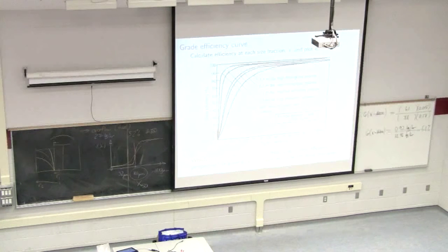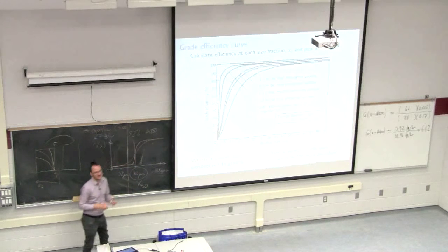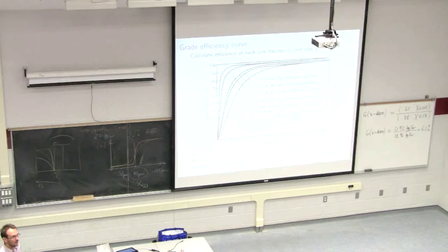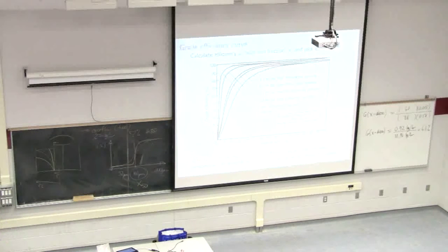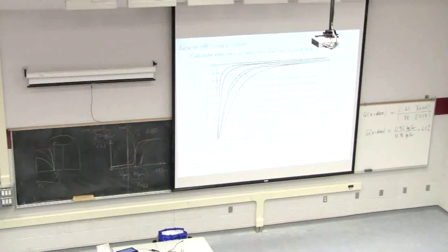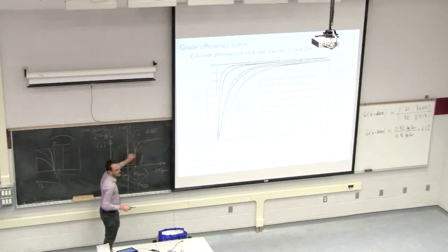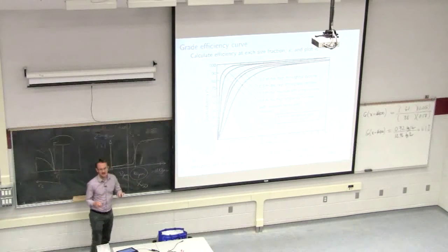With the orange curve you get a bit of everything in your coarse and fine streams; with the green curve you get a clearer distinction. That's if you're using cyclones to split along a particle size — a very different goal from dust separation, where you want to remove all solids of any size to the coarse stream so the overflow is primarily air or fluid. In this particular example we're using the cyclone to separate particles into two size categories.